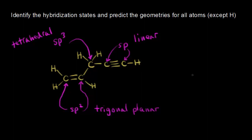Let's go ahead and count up the total number of sigma and pi bonds for this molecule. First, let's count the number of sigma bonds. Starting with this carbon, here's a sigma bond, here's a sigma bond. We know that a double bond has one sigma bond and one pi bond — I'll draw the pi bonds in red. I already colored the sigma bonds blue. All single bonds are sigma. When I get to the triple bond, one of those is a sigma bond and two of those are pi bonds. Then finally there's one more single bond, which is a sigma bond.